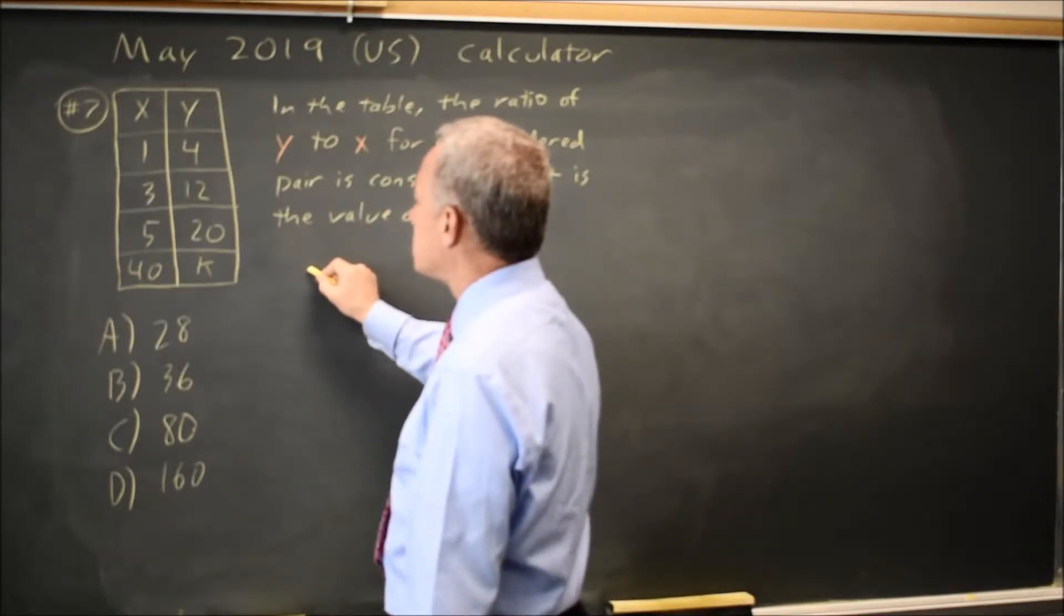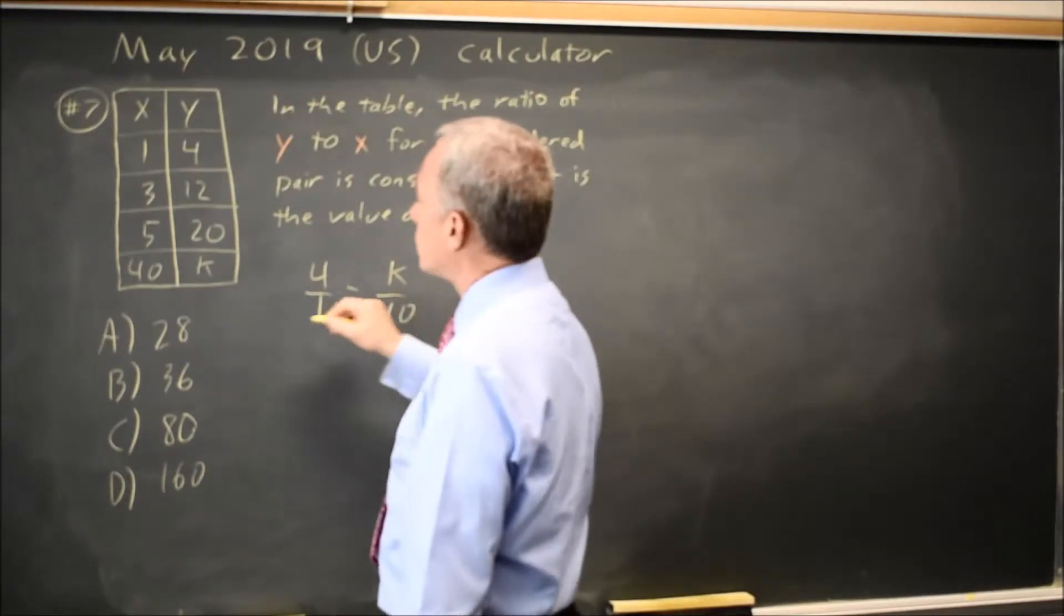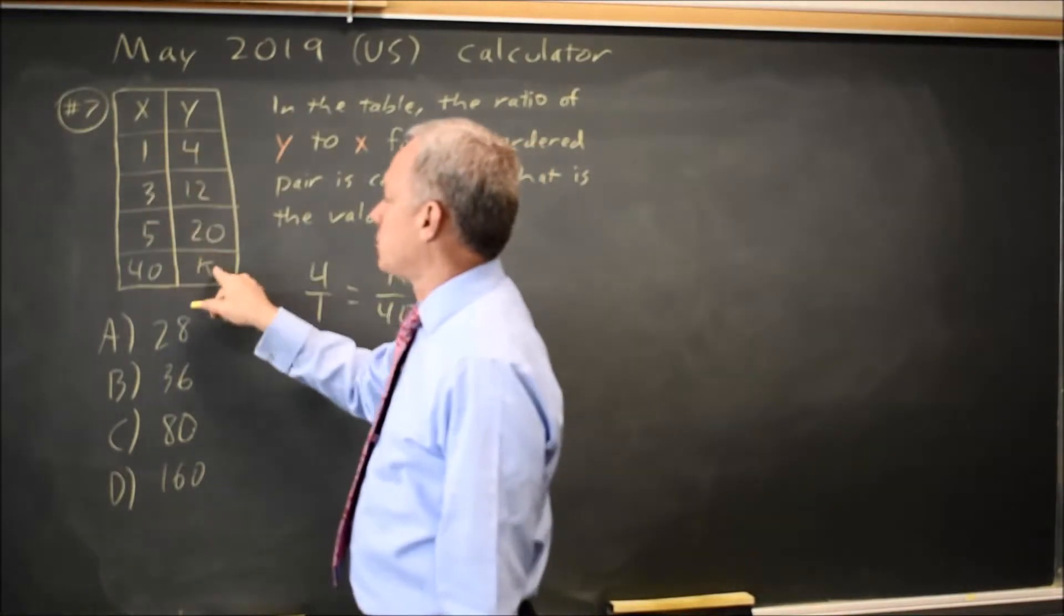So y over x is constant, so 4 over 1 equals k over 40. The y over the x equals the y over the x.